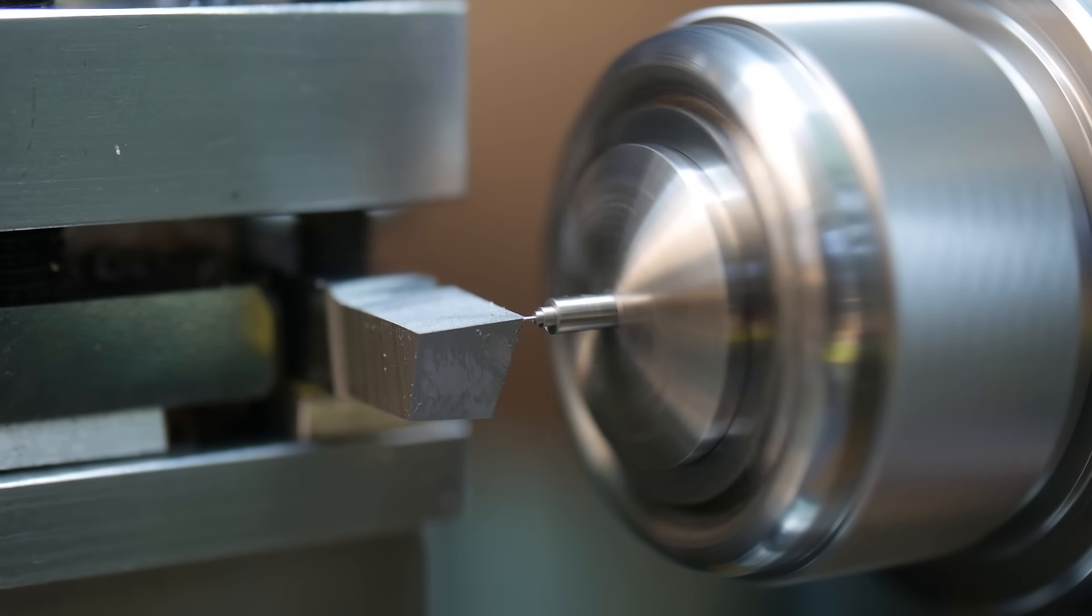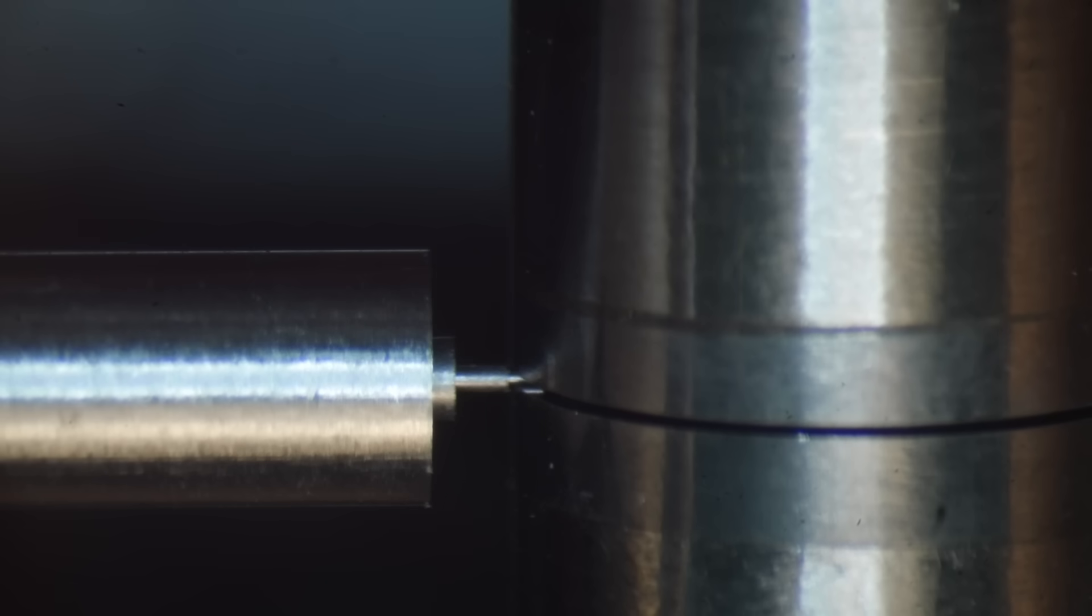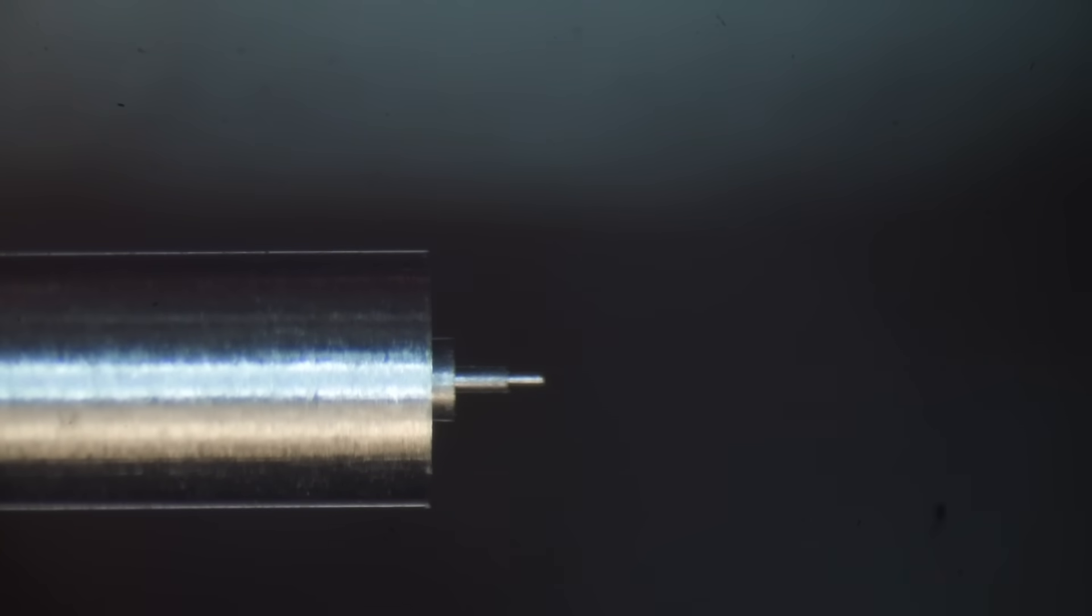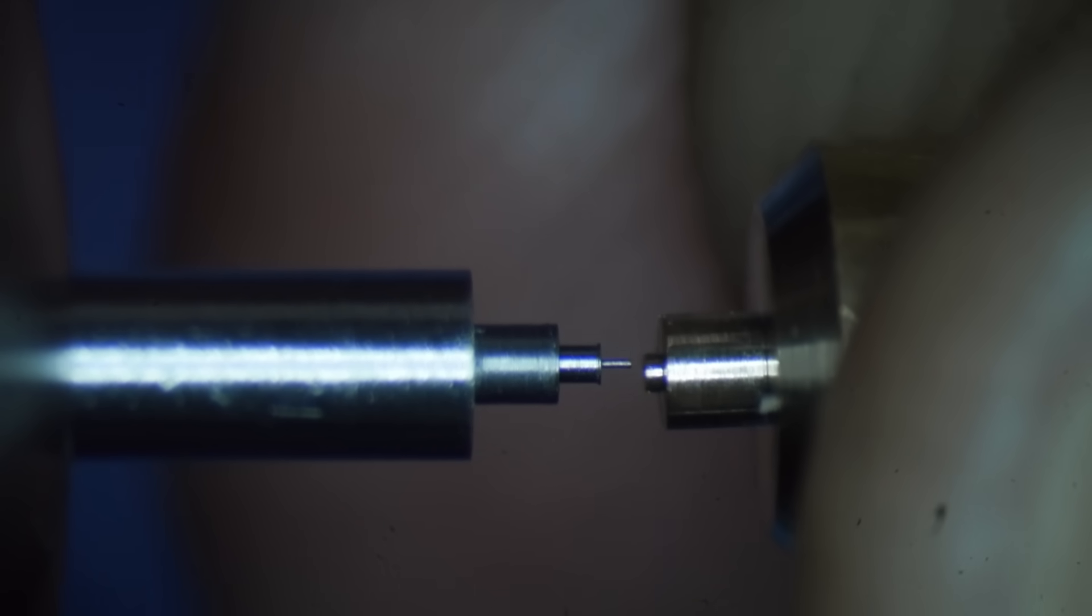For example, the rotor shaft is 90 microns in diameter, which is about the diameter of a human hair. This makes it very easy to buckle, break or even squash by just measuring it. Now to avoid this problem, I drilled a 0.1mm hole in a piece of brass to use as a gauge.